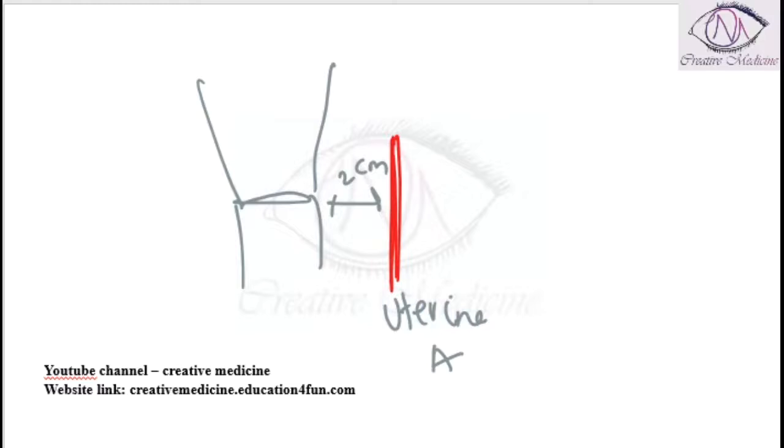Ureter lies posteriorly to the uterine artery. This is called the water under the bridge area. Water under the bridge area is the most common site of ureteric injury.